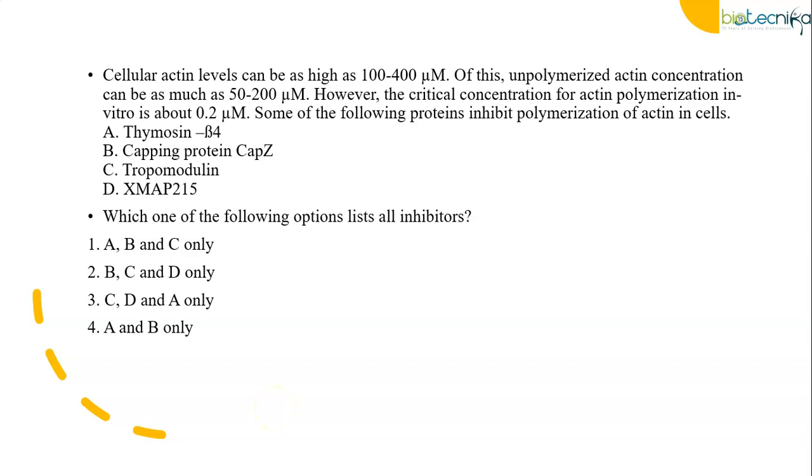Cellular actin levels can be as high as 100-400 micromolar. Of this, unpolymerized actin concentration can be as much as 50-200 micromolar. However, the critical concentration for actin polymerization in vitro is about 0.2 micromolar. Some proteins inhibit polymerization of actin in cells: Thymosin beta-4, capping protein, tropomodulin, and Exmap 215. You have to identify the group of inhibitors. The correct answer is option 1, that is ABC.